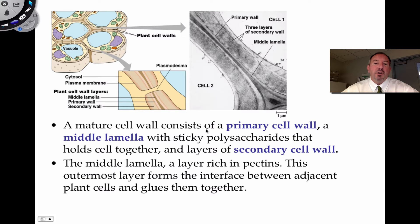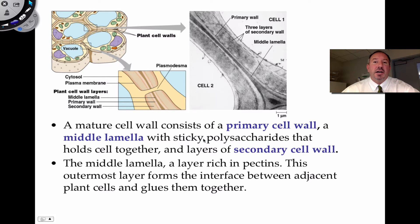Most plant cells have what's referred to as a primary cell wall, and you can see it right here in this transmission electron micrograph. In the middle there is something called the middle lamella, which contains sticky polysaccharides like pectin, providing strength and holding cells together. Some specialized plant cells that are extra rigid have a secondary cell wall, making those particular cells extremely tough.